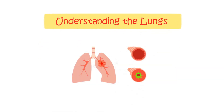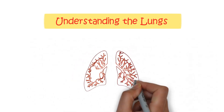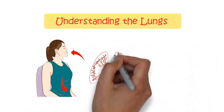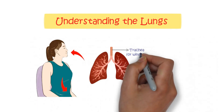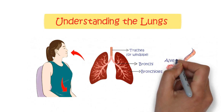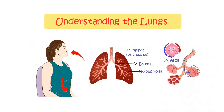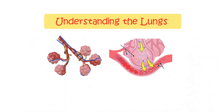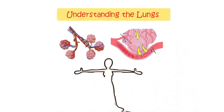To comprehend the impact of bronchiolitis, it is crucial to have a basic understanding of the structure and functionality of the lungs. When we inhale, air enters the lungs through a pathway consisting of the trachea, or windpipe, which leads to larger branching airways known as bronchi, and finally reaches the smaller airways called bronchioles. The bronchioles serve as the last set of airways before the air enters millions of tiny air sacs called alveoli, which are essential for oxygen exchange.